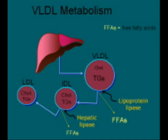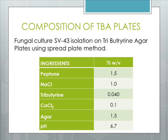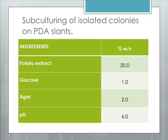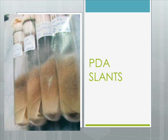Now let us begin the procedure. Firstly, we will isolate the culture using tributyrene agar plates by the spread plate technique. The second step is the subculturing of isolated colonies on potato dextrose agar slants, where fungal strains are harvested for 96 hours with 0.1% Tween prepared in distilled water to inoculate the seed flask. Sterility and purity of various media is checked at different stages by preparing nutrient broth and nutrient plates.